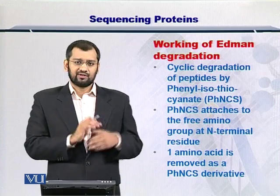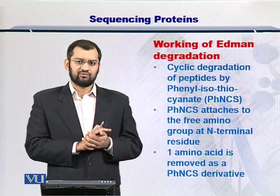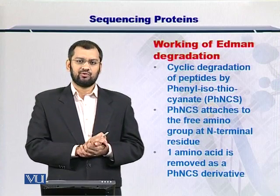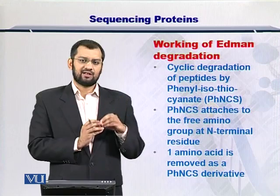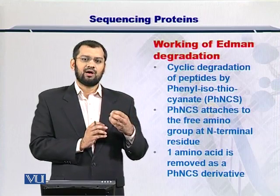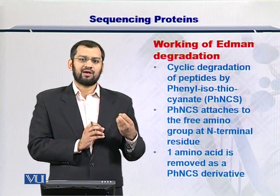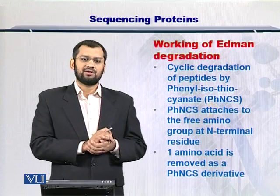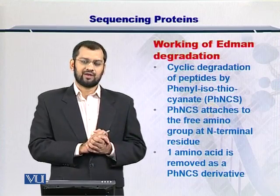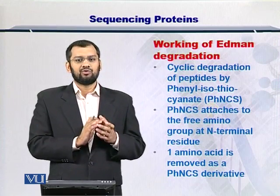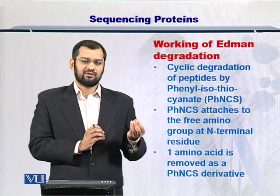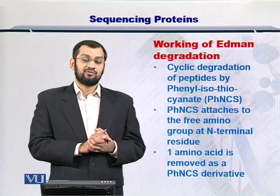The process is called the cyclic degradation of the protein, and a molecule called phenyl isothiocyanate is used, which attaches itself to the residue at the N-terminus and breaks that residue away from the polypeptide chain. The molecular weight of that residue is then measured as a derivative of phenyl isothiocyanate, allowing you to determine the identity of each amino acid and hence sequence the protein.